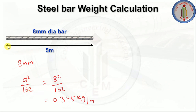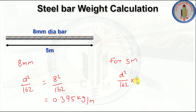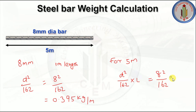Now we have the length of the bar as 5 meters. To find the weight for 5 meters we calculate d² divided by 162 multiplied by L. So 8² divided by 162 multiplied by 5 gives us 1.975 kg. The weight of an 8 mm dia bar for 5 meter length is 1.975 kg.